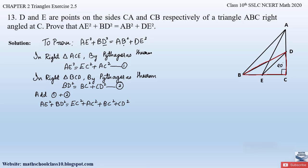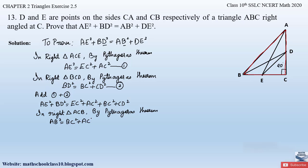Now let us obtain the right-hand side, which is AB² + DE². Consider side AB — the right-angle triangle formed with side AB is triangle ACB. In right triangle ACB, by Pythagoras theorem, since AB is the side opposite the right angle, AB is the hypotenuse. So AB² = BC² + AC². Let this be equation 3.